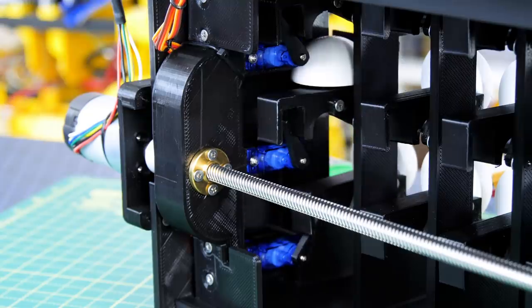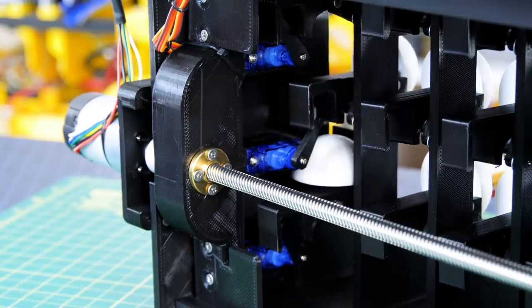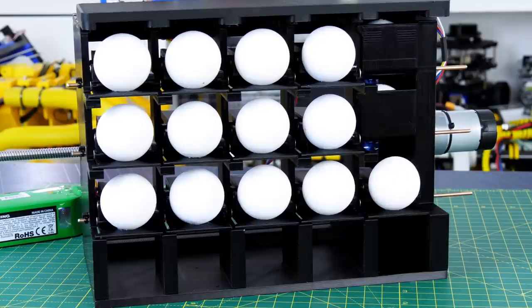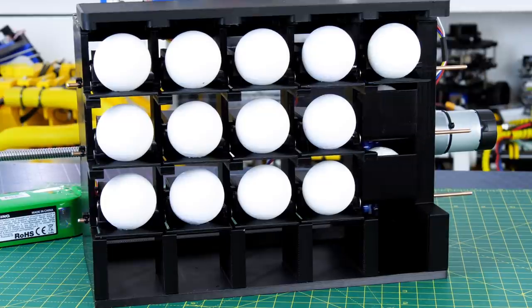So now it's time for some rudimentary coding and testing and first of all I'm just going to flip those dots over in turn in one column and those servos seem to have more than enough force to flip them and there's enough clearance for them to move up and down so so far it seems pretty good.